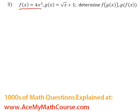Okay, here we have f is 4x squared and g is the root of x plus 1. We want to start with f of g of x.